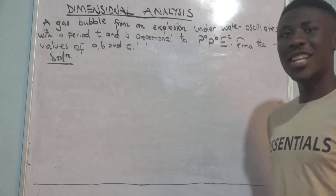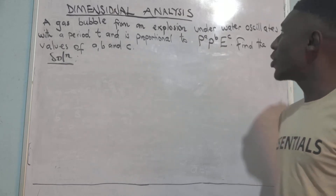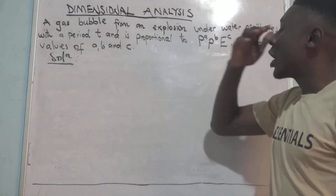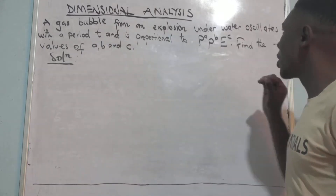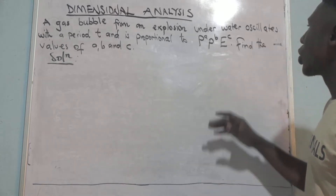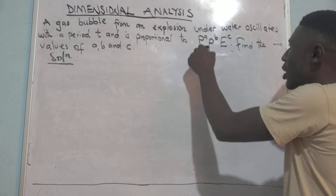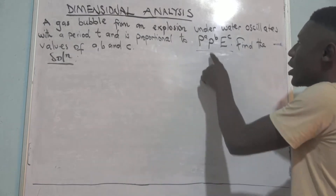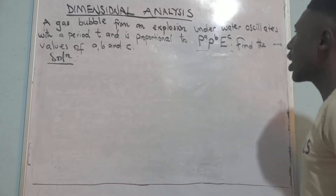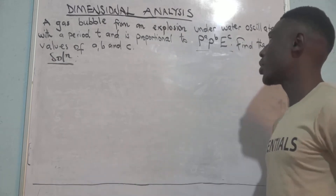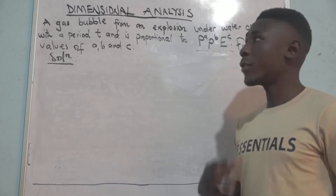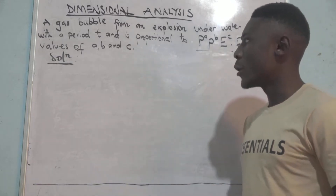Hello viewers, welcome to another interesting video on dimensional analysis. We are going to discuss a gas bubble from an explosion underwater. Its period T is proportional to hydrostatic pressure, density, and the energy of the explosion. Given this information, we are supposed to find the values of a, B, and C.